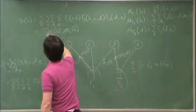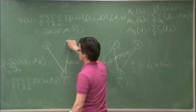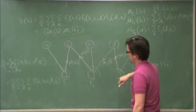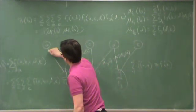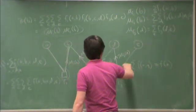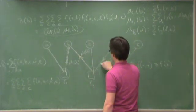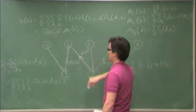And finally, the answer is collected at B as the product of the incoming messages. So in other words, this message summarizes all the information from over here, and this message summarizes all the information from the rest of the graph.